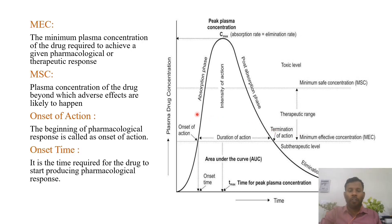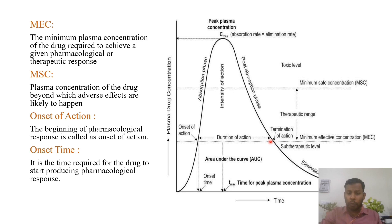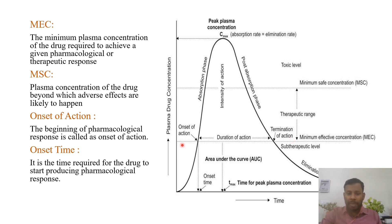Now, these are all pharmacodynamic parameters. First one is MEC, minimum effective concentration. This is the minimum concentration of drug in plasma required to produce the pharmacological action. In the curve, the line of MEC means this much drug should be there in blood so that the drug will show its action. Below this line there will be no drug action — hence it is written sub-therapeutic level.